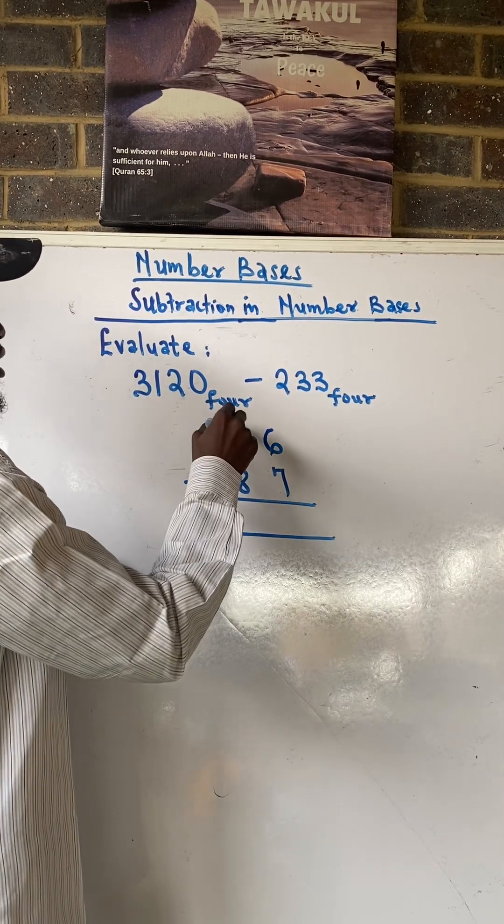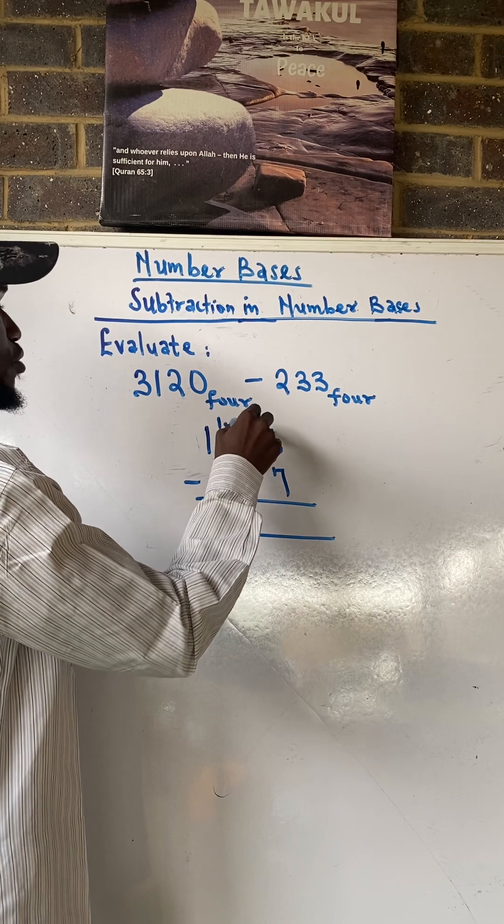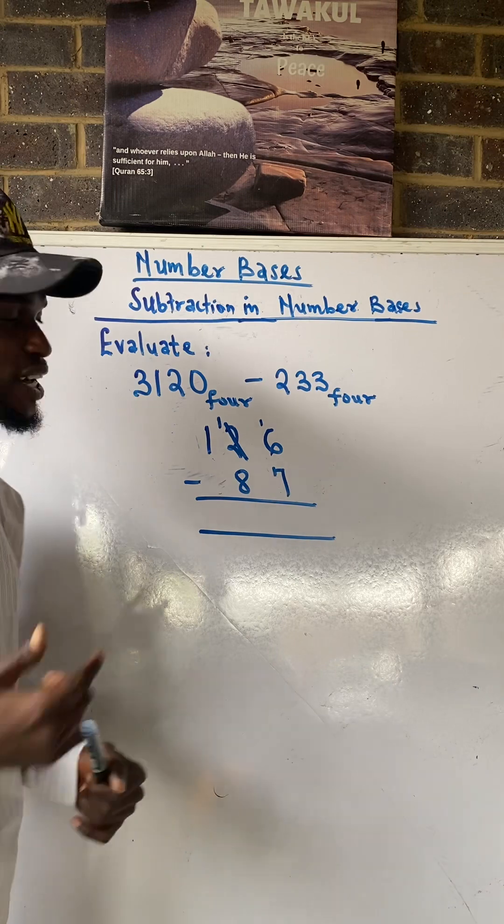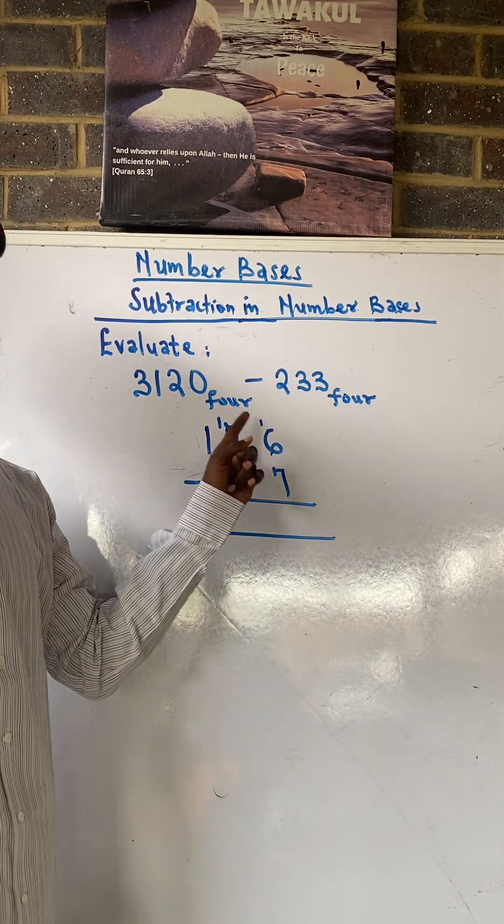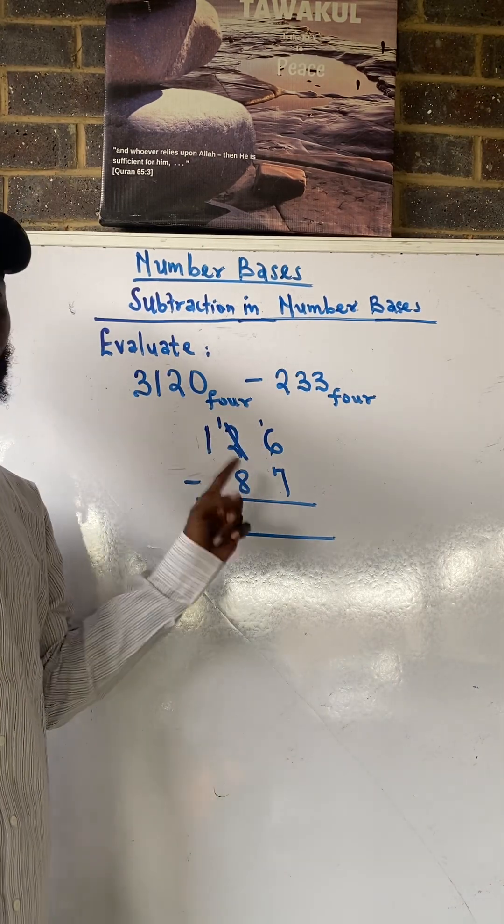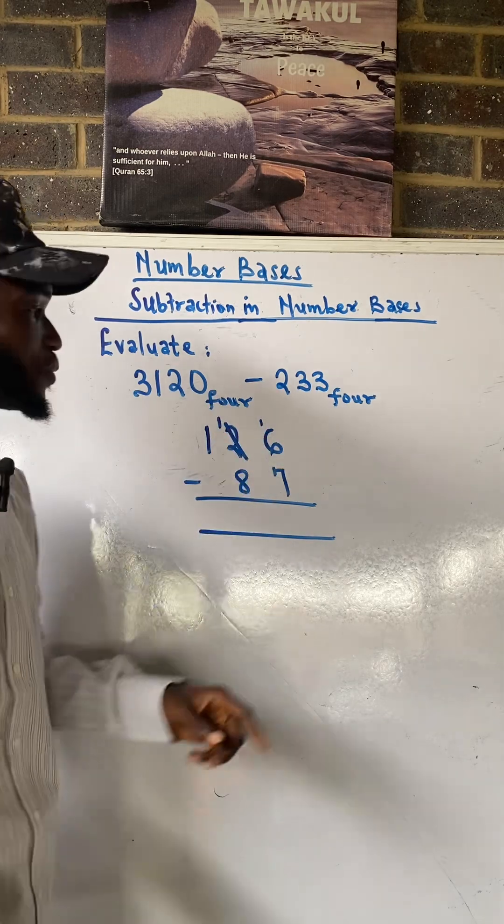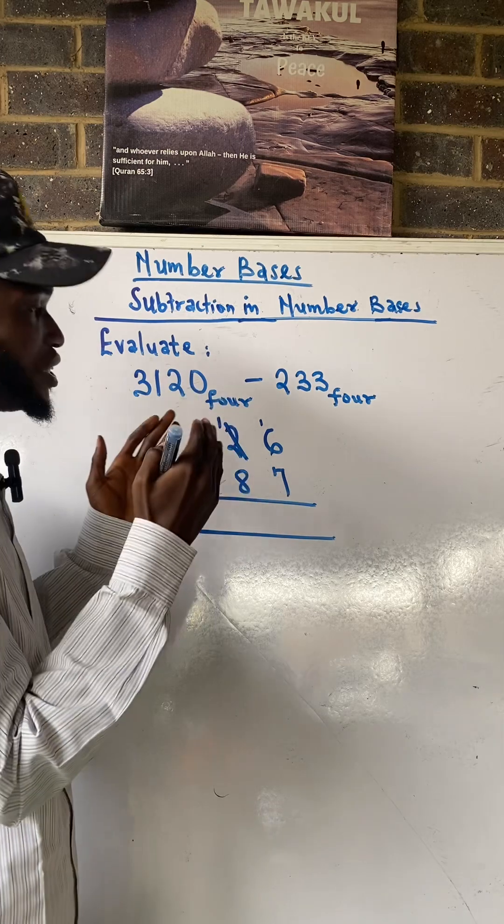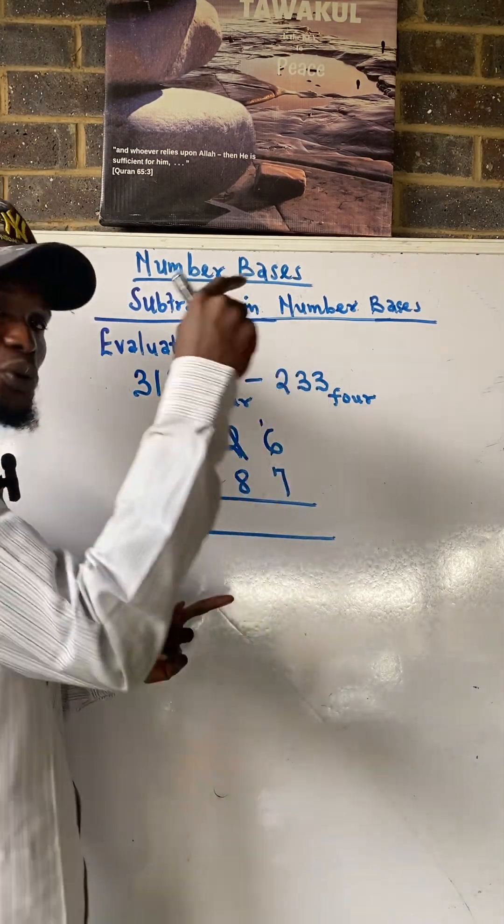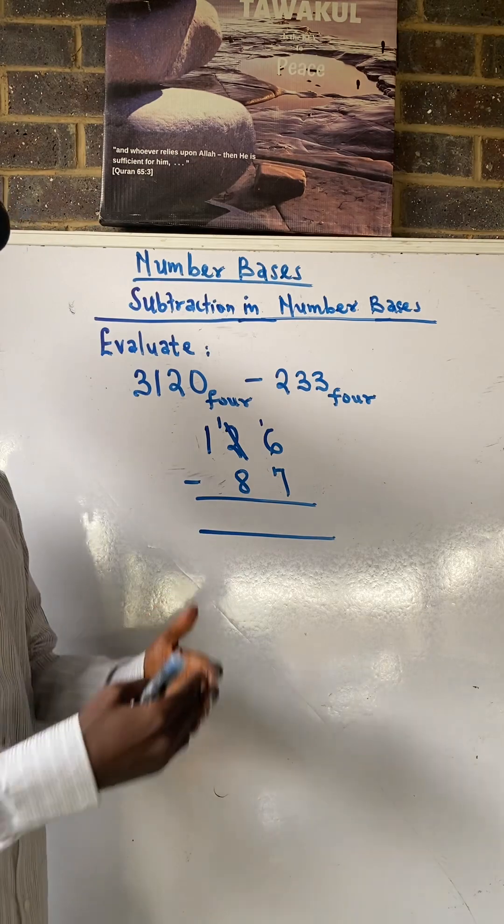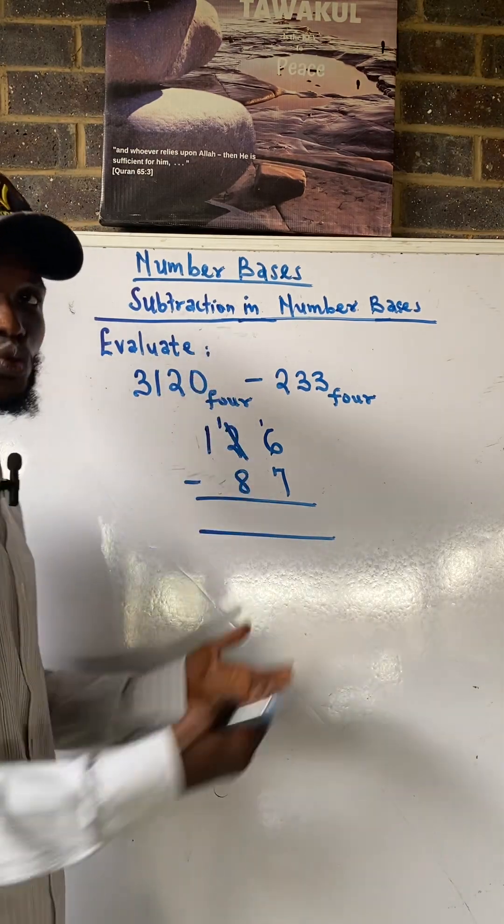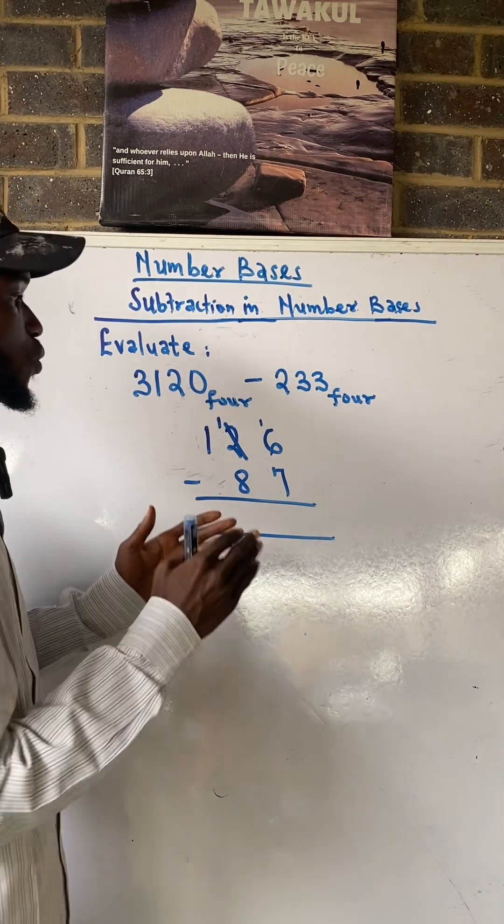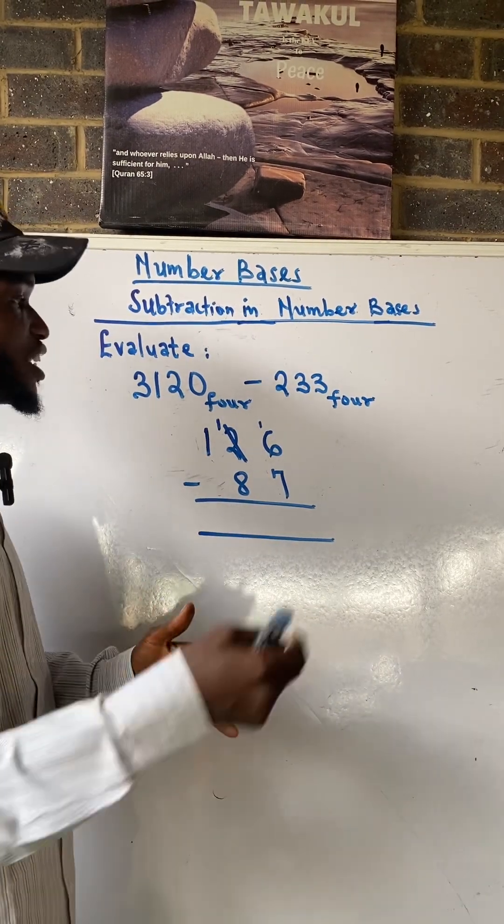So if we borrow one from here, this will remain one, then we are going to have one here. The teacher will say add one to this and have 16, whereas actually it is not one that we borrowed from here, we have borrowed 10. Why are we borrowing 10? Because we are operating in base 10. If you are dealing with base 10 you borrow 10, if you are dealing with base 2 you borrow 2, if you are dealing with base 5 you borrow 5. So whatever the base that you are dealing with, that's what you have to do.